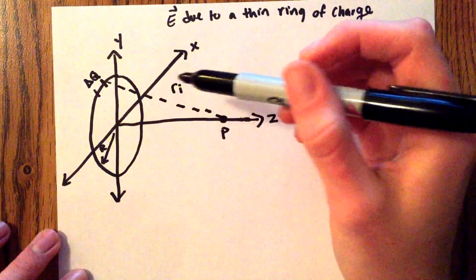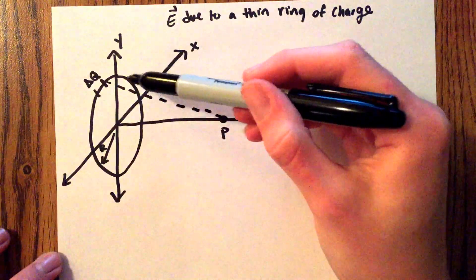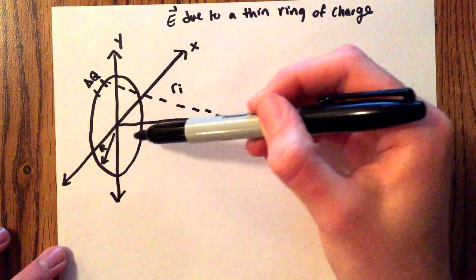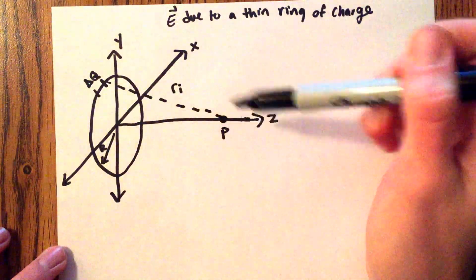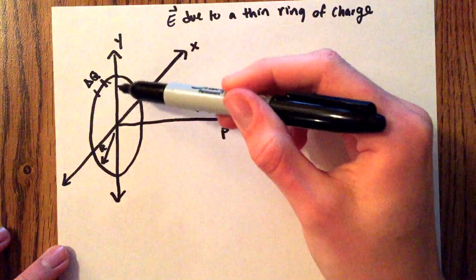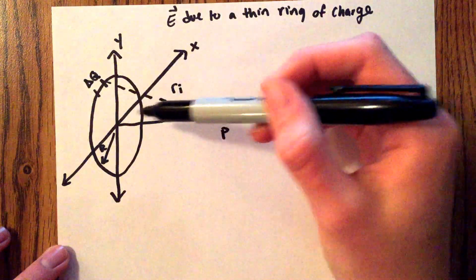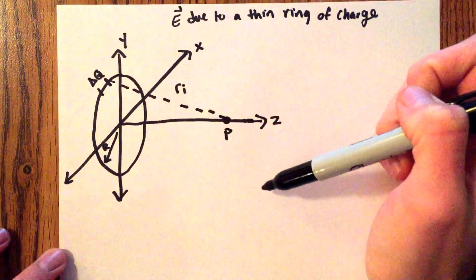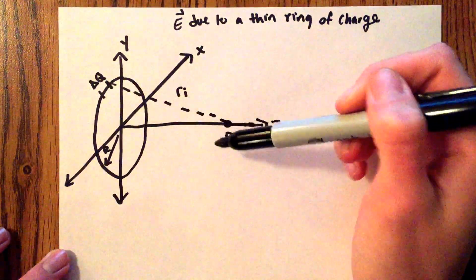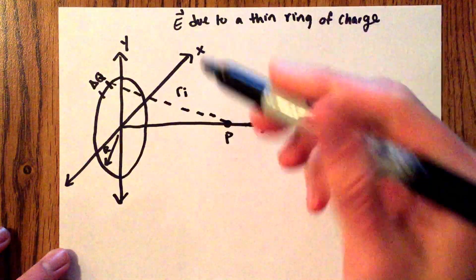In this situation you can see that the ring is uniformly distributed around the axis, so therefore the y-components are going to cancel out and the only components we're going to be taking into account are going to be the z-components.